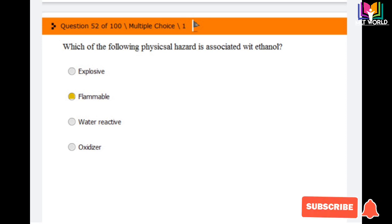Question number 52: Which of the following physical hazards is associated with ethanol? Options are explosive, flammable, water reactive, oxidizer. The answer is flammable. You can see the flammable logo on the ethanol bottle.